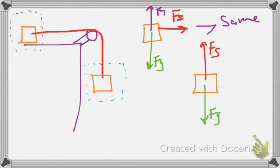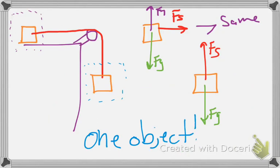Things to remember about a Free Body Diagram: they can only occur on one object at a time, and they show all of the forces that act on that one object. These forces are drawn as arrows that are labeled. These arrows carry a specific name — they're called vectors, which means the length of the arrow represents the magnitude, and it also shows the direction. We've covered a few other vectors already: velocity is a vector, acceleration is a vector. Force is just the next one in line.